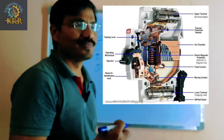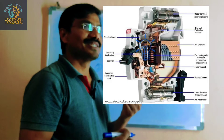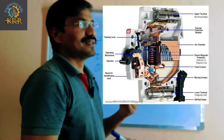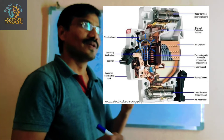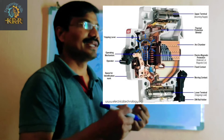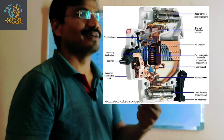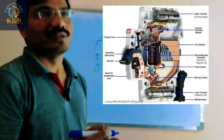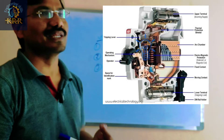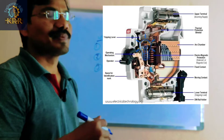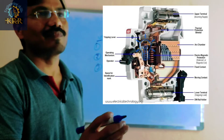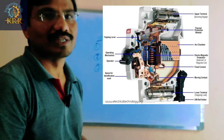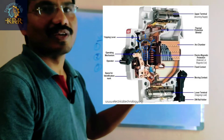Inside the MCB, a bimetallic strip is present — made of two types of materials. Current passes through this bimetallic strip. When current exceeds the rated value, temperature increases, causing the bimetallic strip to bend. With the help of a plunger, the MCB trips and the circuit is isolated. This is how overload protection works.